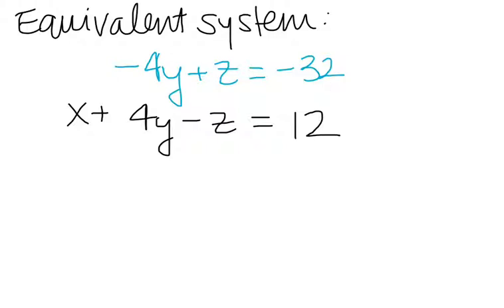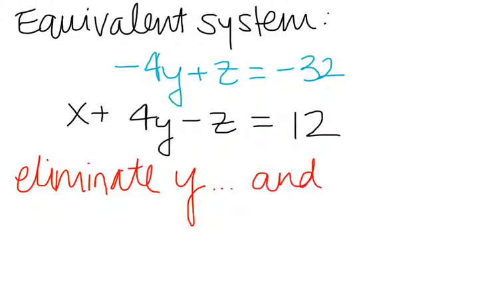So now I'm going to try to eliminate y. But what happens? At this point, to eliminate y, I would just add these equations together. But when I do this, I will also eliminate z. There's no way around it.